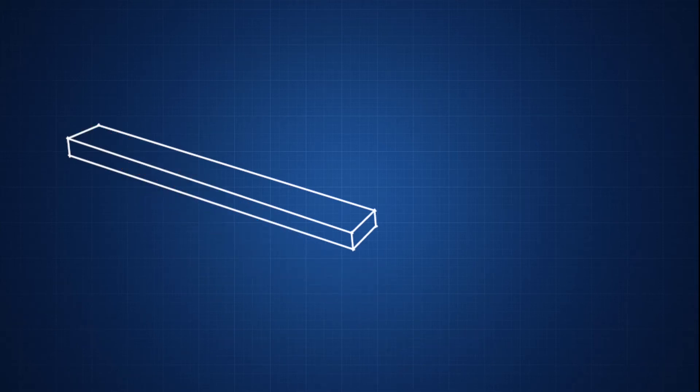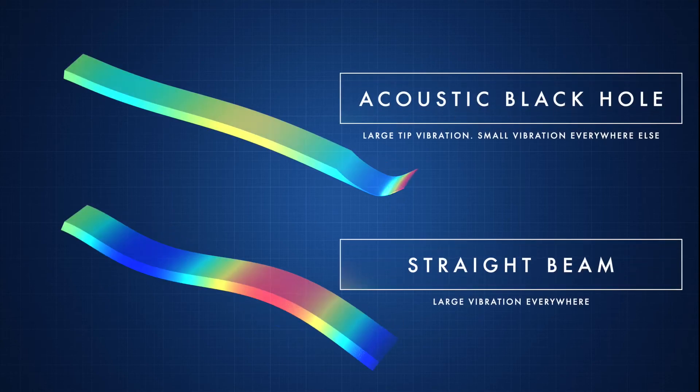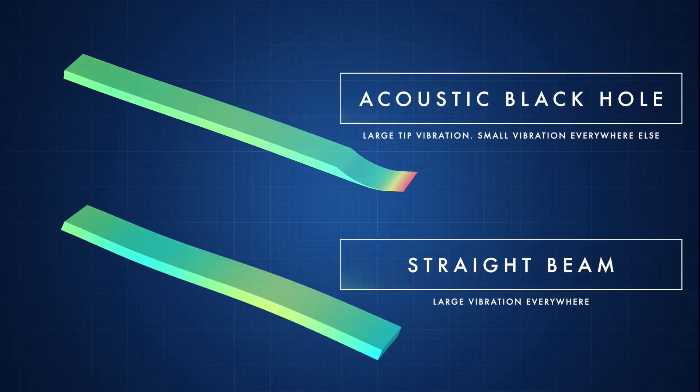We can turn this into an acoustic black hole by gradually reducing the thickness at the end of the beam. As the vibrations enter this part of the structure they travel slower which allows the energy to build up as it approaches the tip, meaning less energy is in the rest of the beam.